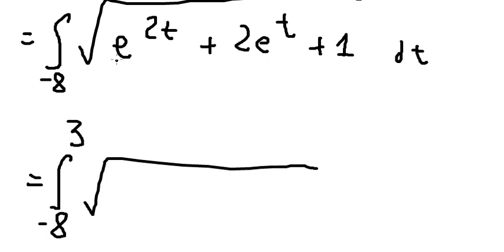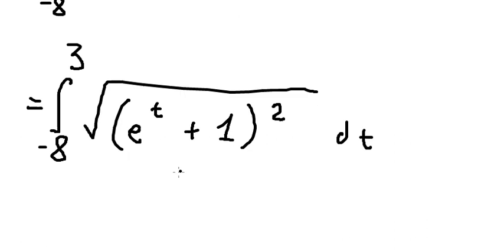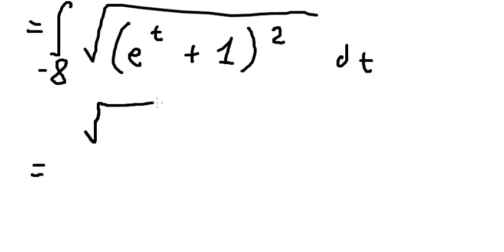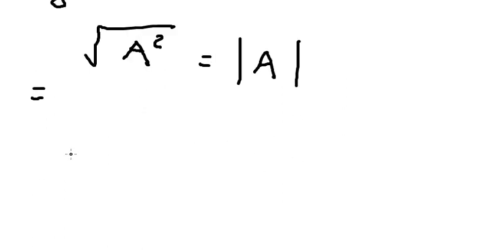This one and this one we simplify. This one, that is about identities, so we have e to the power of t plus 1 to the power of 2, dt. We know that the square root of a square equals the absolute value. So now we have like this.